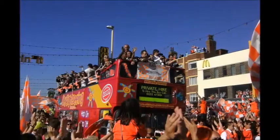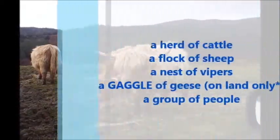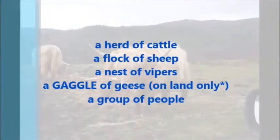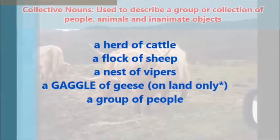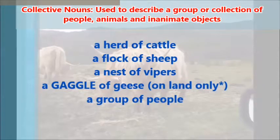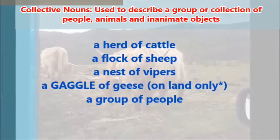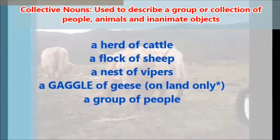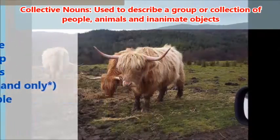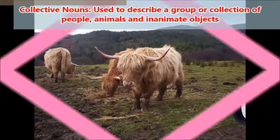For example, that's a crowd of people. Herd, flock, nest, gaggle, group — these are all collective terms. There's a great big list of them. There's a link to them at the bottom of the video. Please check that out. There are so many of them — there are loads.